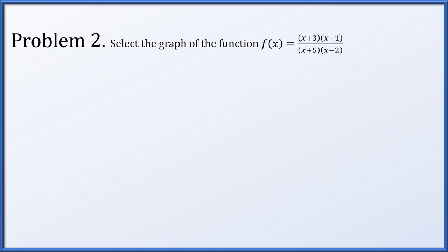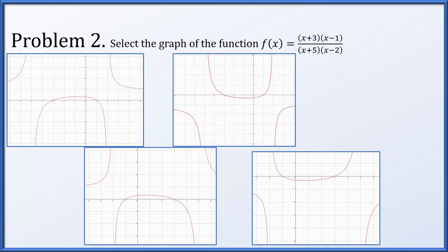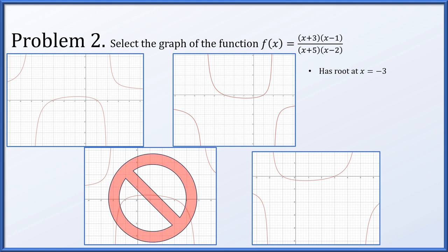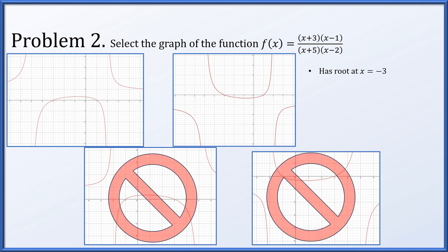In problem 2, much like problem 1, we're given a rational function and have to determine which of the four graphs matches: (x+3)(x-1)/[(x+5)(x-2)]. The numerator will be 0 if x = -3. The graph in the lower left does not have a root at x = -3, so it's out. Also, the graph in the lower right does not have a root at x = -3. The function also has a root at x = 1, but both remaining graphs have roots at both x = -3 and x = 1, so that doesn't help us yet.